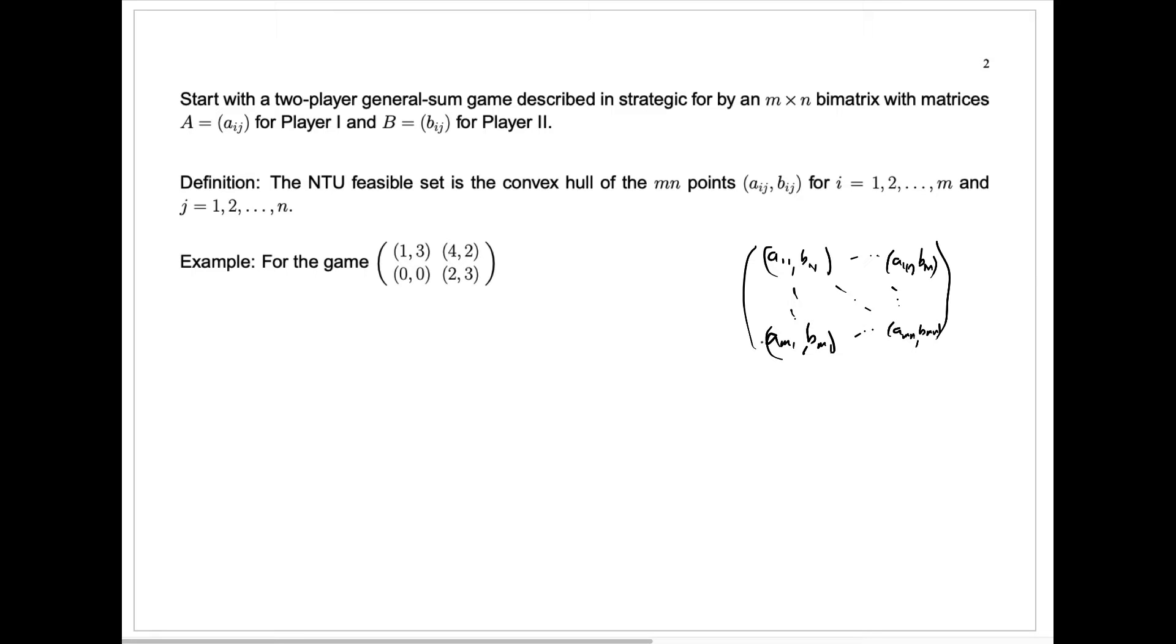Now, their agreement doesn't have to be a pure strategy. They don't have to agree player 1 will play exactly row I and player 2 will play column J. They could agree to play different rows with different probabilities for player 1 and different columns with different probabilities for player 2.